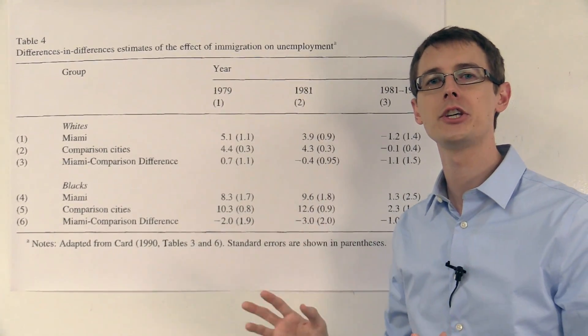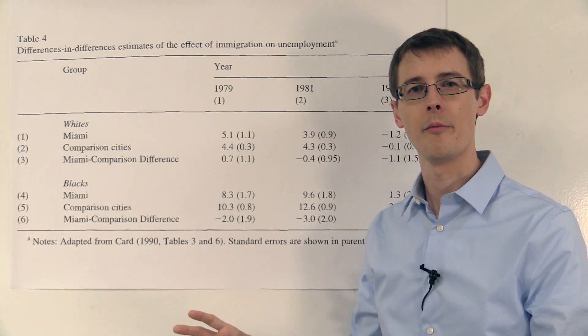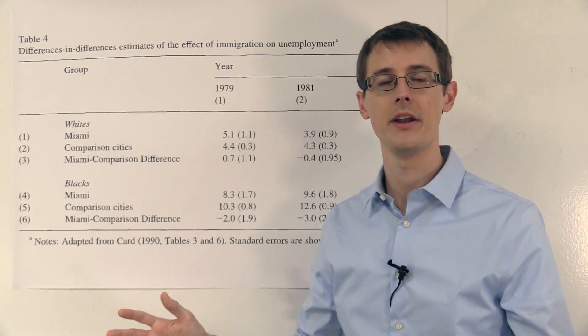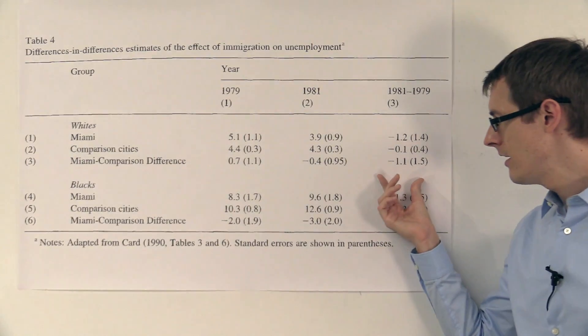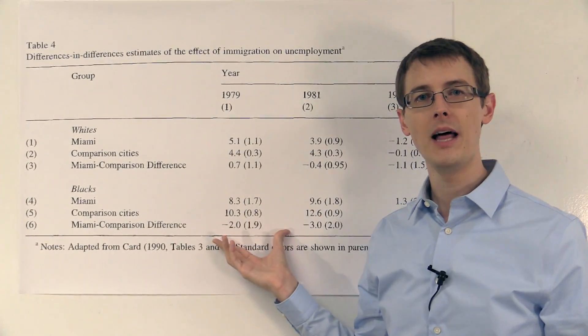That suggests that immigration is lowering the unemployment rate, or increasing employment, increasing the percentage of people who have jobs. Let's do the same analysis for blacks.